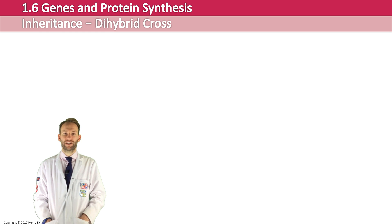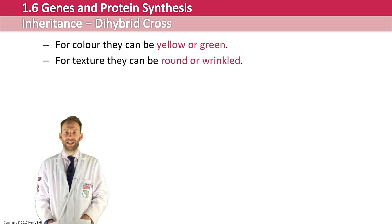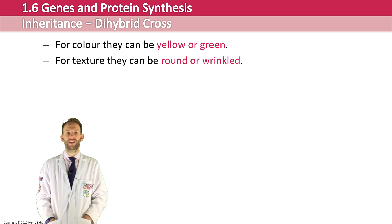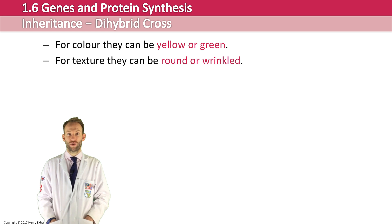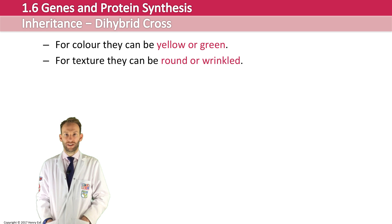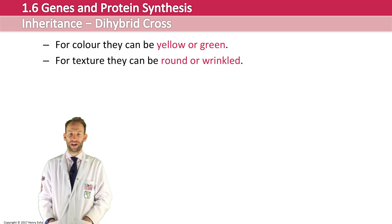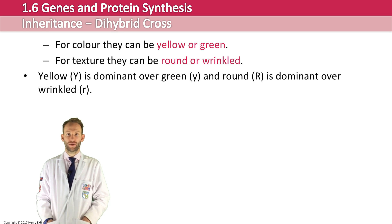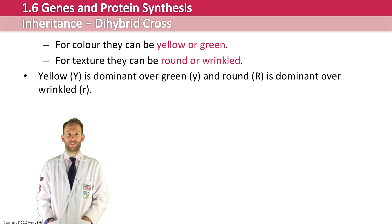Let's look at this example using two genes for seed characteristics — colour and texture. Colour can be yellow or green, and texture can be round or wrinkled. Yellow is dominant over green: capital Y for yellow, small y for green. Round is dominant over wrinkled: capital R for round, small r for wrinkled.